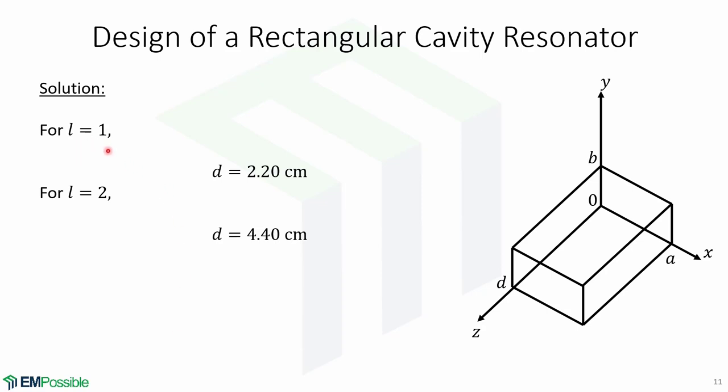Now for l equals 1, D is equal to 2.20 cm, and for l equals 2, D is equal to 4.4 cm.